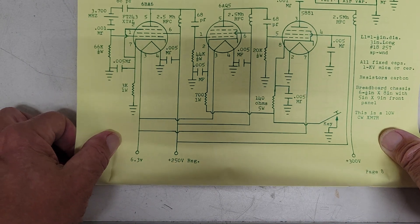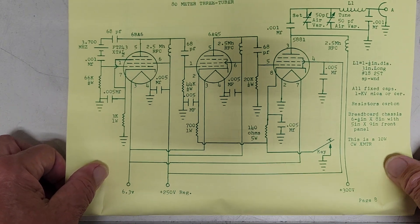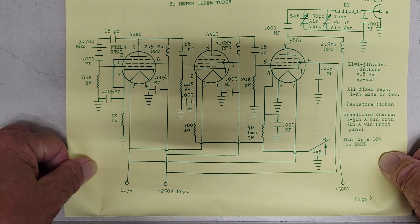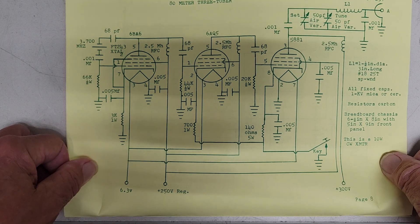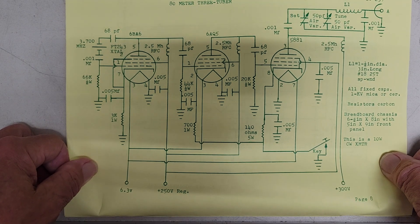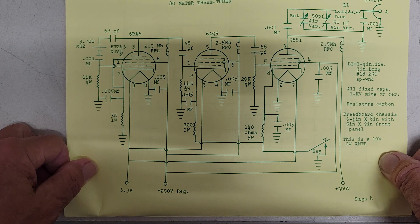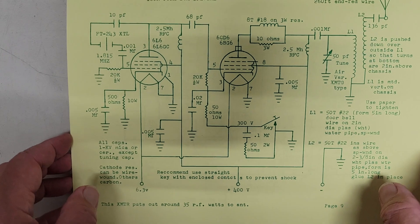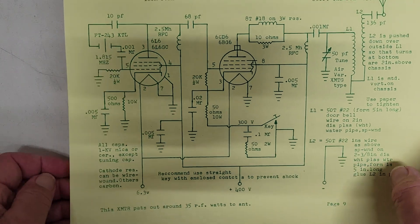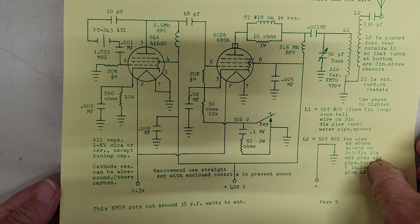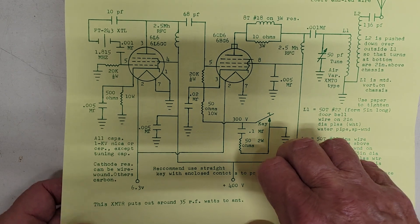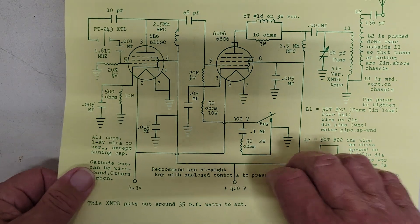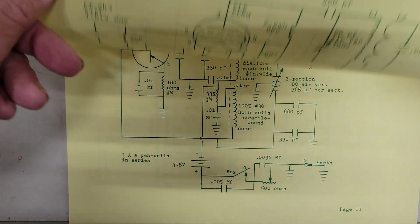Here's an 80 meter three-tuber, as he calls it. I hear him on the air on 40 meters a lot, running two-tubers and three-tubers. That's what he always tells folks what he's running. Here we have a 160 junk box special. 35 watts output, he says. A 6L6 oscillator and a 6BG6 final tube.